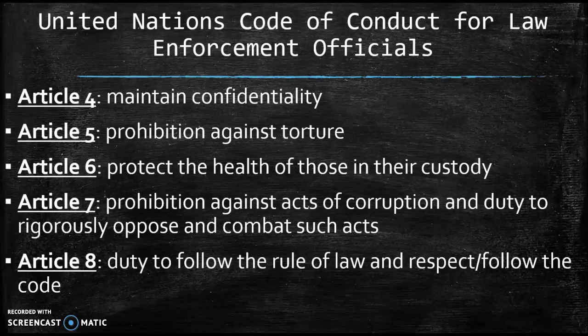The United Nations code — make sure to be able to differentiate it from the others. On the quiz and the exams, when I give you scenarios, you apply all the codes that apply. Use, identify, and apply all the codes and all the sections of them, and explain it. Article 4: Maintain confidentiality — no torture. Article 6: Protect the health of those in custody. Prohibition against acts of corruption. Duty to follow the rule of law. They cover a lot of the same ground as the IACP one, stated differently. In some cases it goes further, in some cases it's more specific. Compare them and be able to apply both to the ethical scenarios.